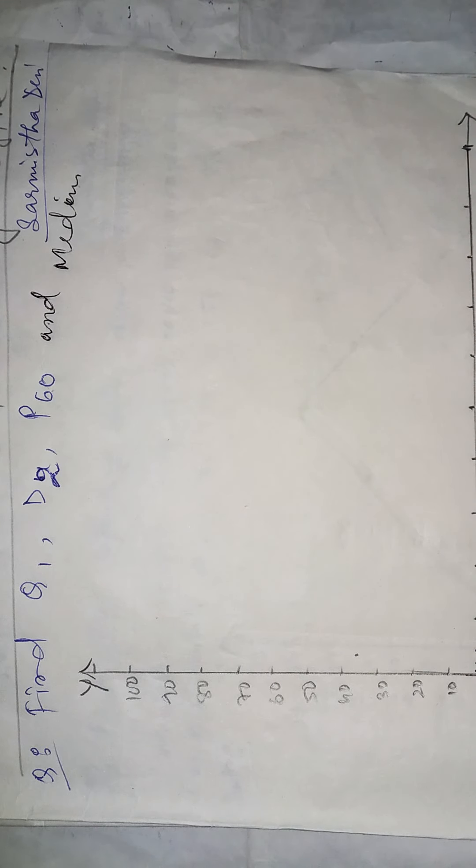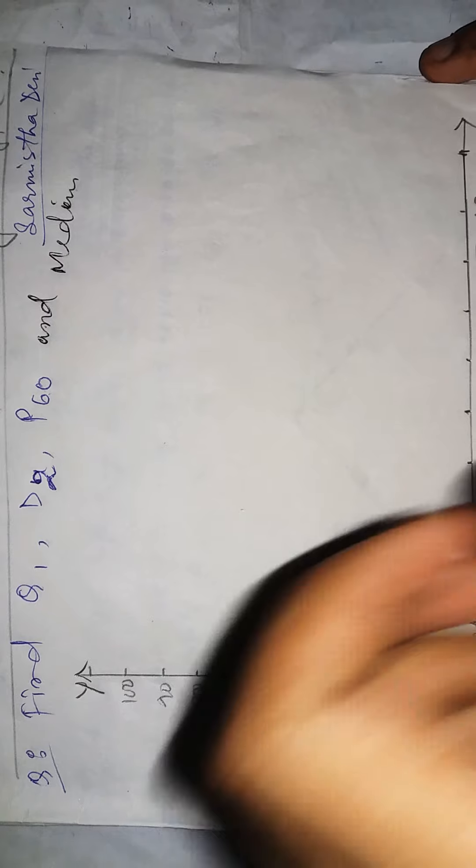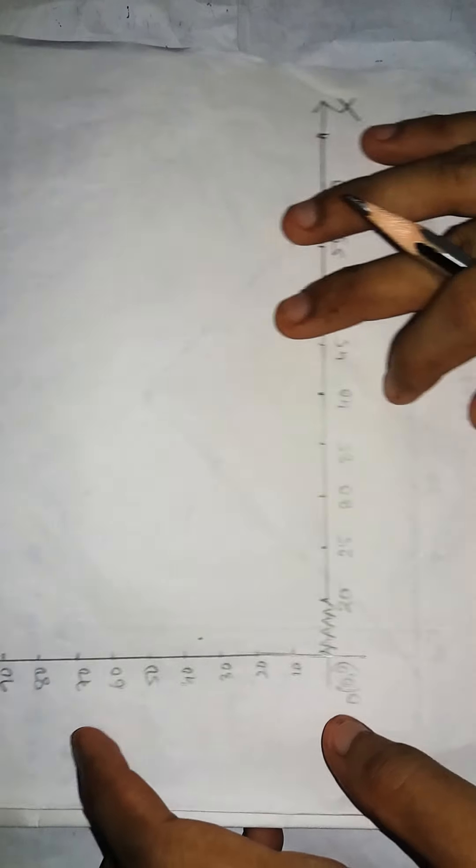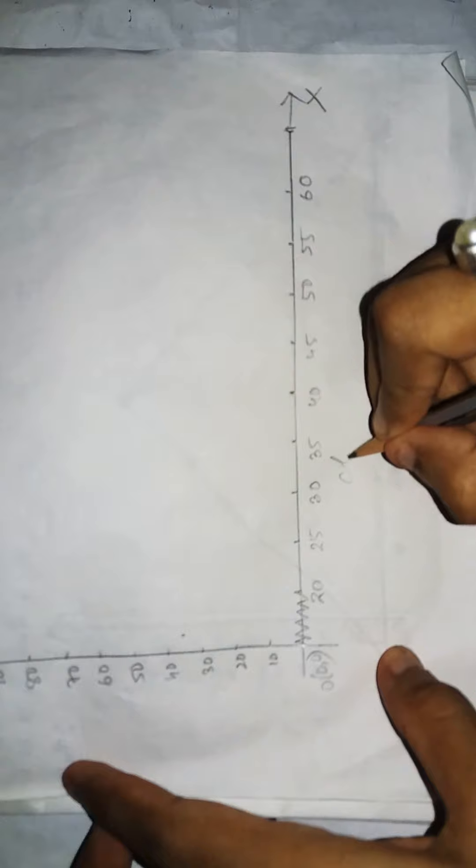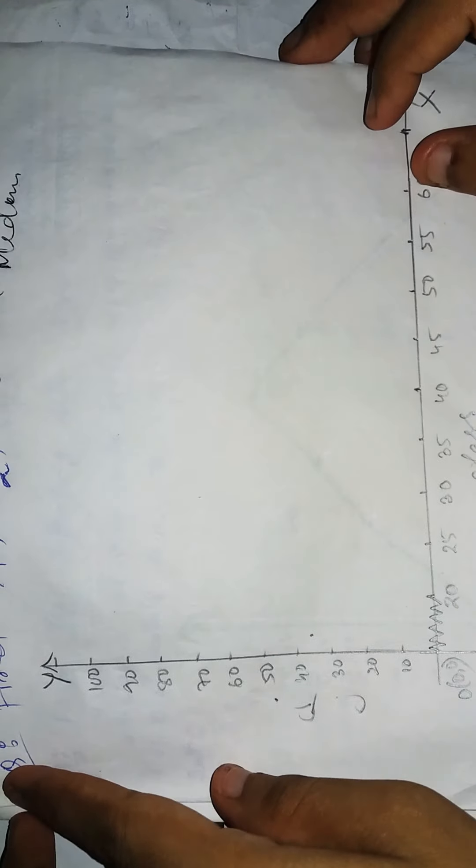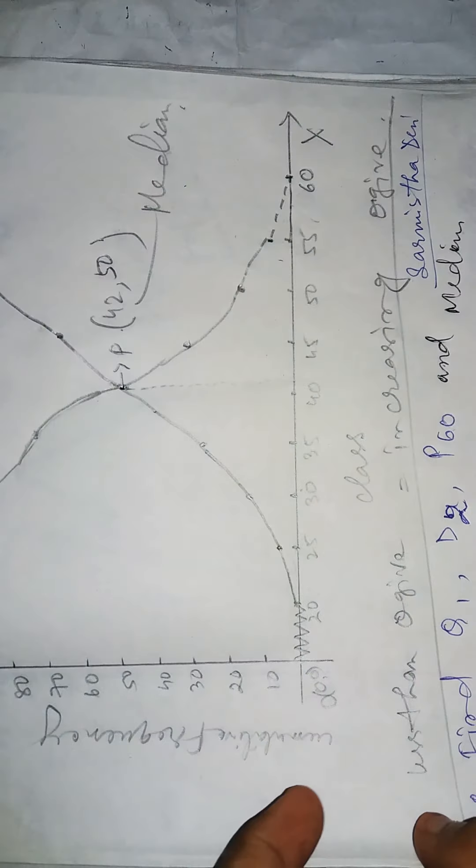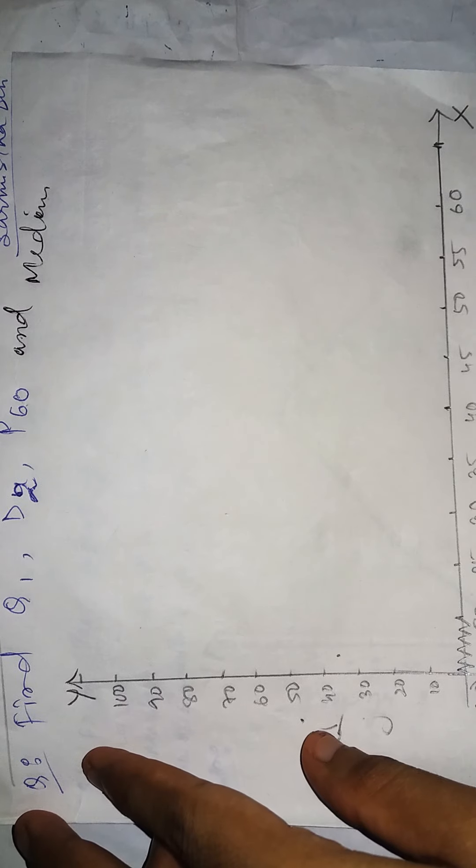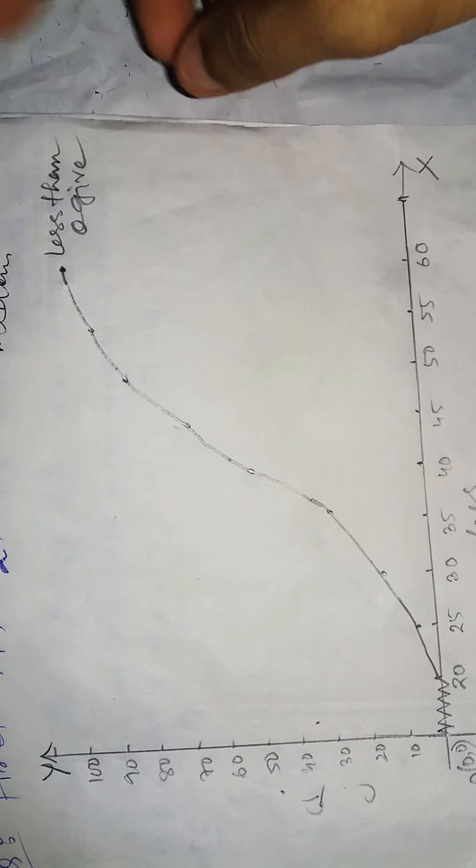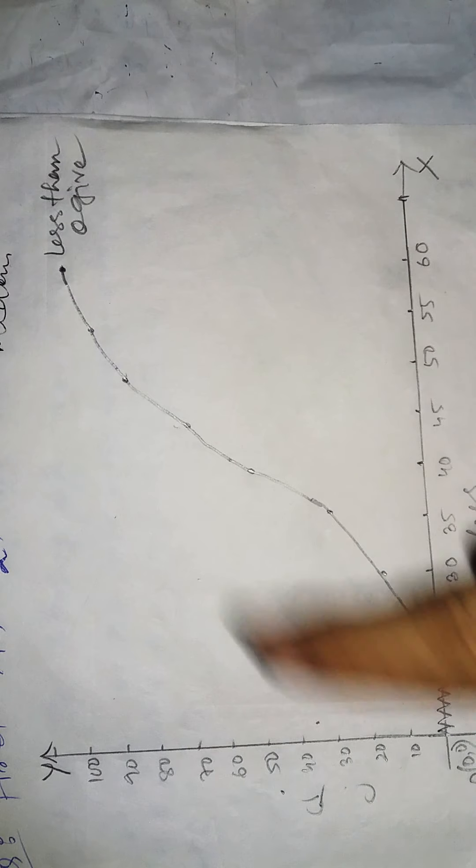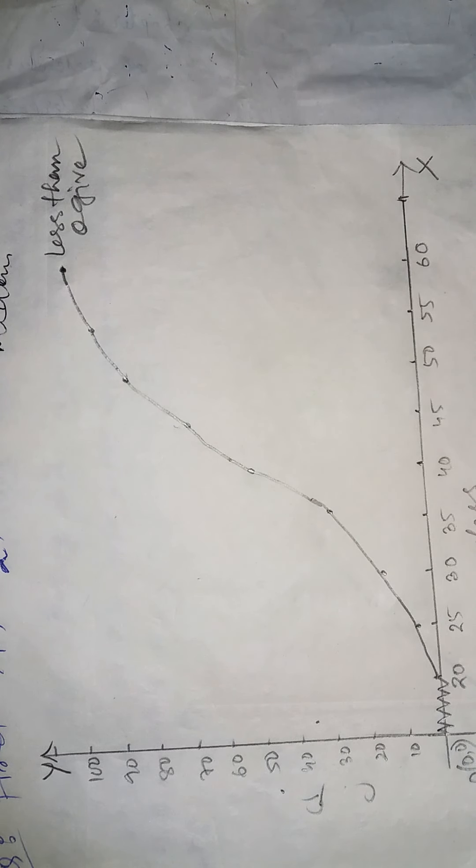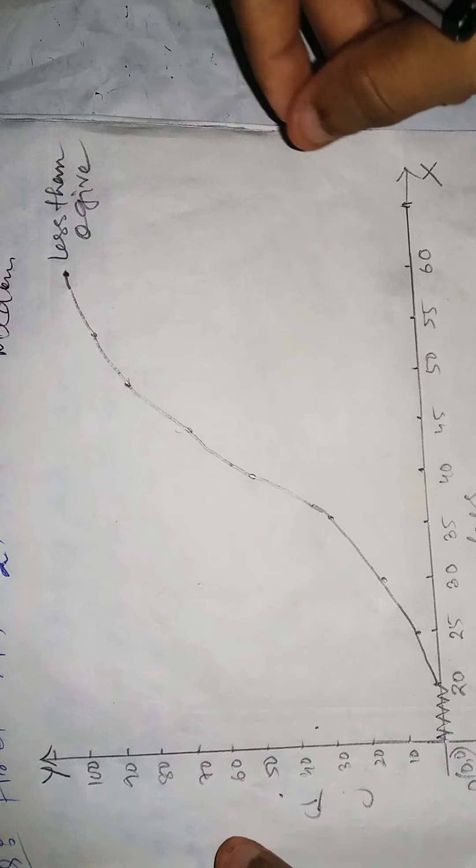So what will be the process? First of all, for the same question, you have to write here. In the x-axis, write class, in y-axis write cumulative frequencies. Then draw only the less than ogive. This is the less than ogive of the frequency distribution.